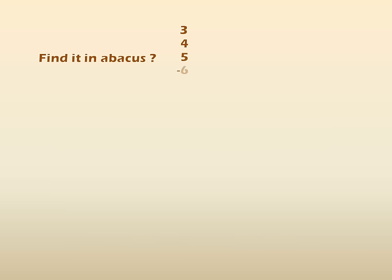Now, again let us see another problem. Find it in abacus. 3, 4, 5, minus 6 and minus 3. So, for this the answer is 3. Here, 3 plus 4 is 7. And 7 plus 5 is 12. And 12 is in the positive position. And these are 6 and 3 in the negative position. 6 plus 3, we get 9. Then, 12 minus 9, we get 3. So, we have to find out this in the abacus frame.